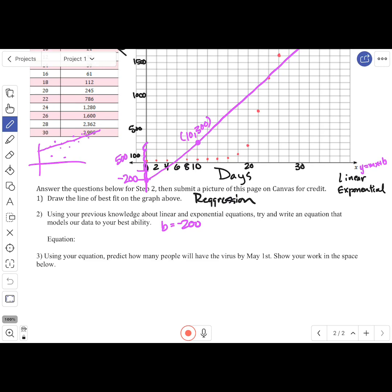So I go up from 200: 100, 200, 300, 400, 500. Then I go over 2, 4, 6, 8, 10. So it would be 500 over 10, which basically is 50. So my slope would be positive 50. My equation would be y equals 50x plus negative 200.